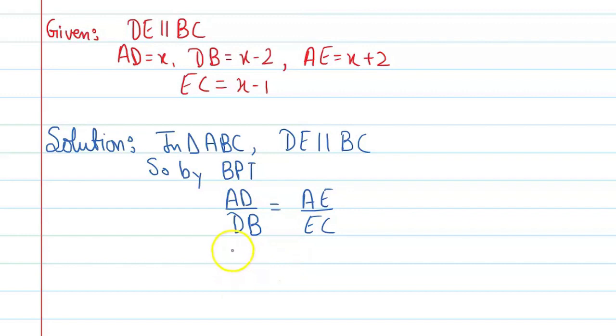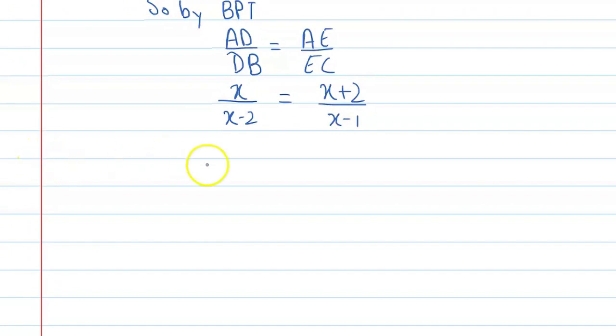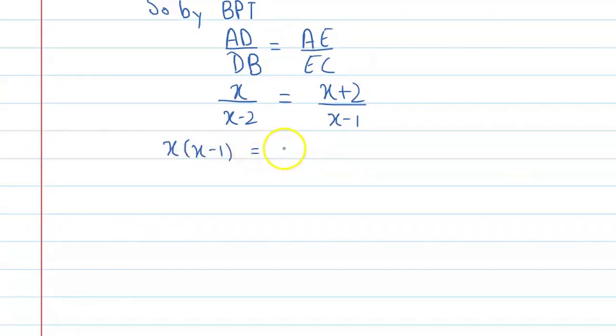This is equal to x upon x minus 2, equal to x plus 2 upon x minus 1. Here we will cross multiply and see what we will get. You can write x times x minus 1, equal to x plus 2 times x minus 2.